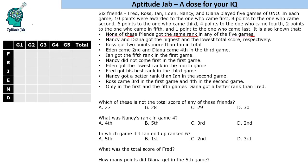Now if you add the total points — ten, eight, six, four, two, and one — that gives us 18, 24, 30, 31. The total comes to 31 points per game.